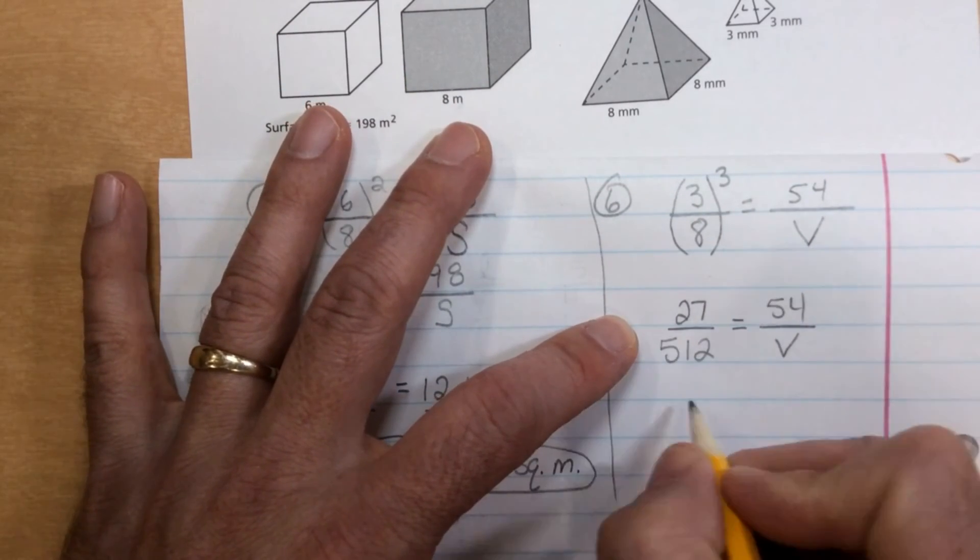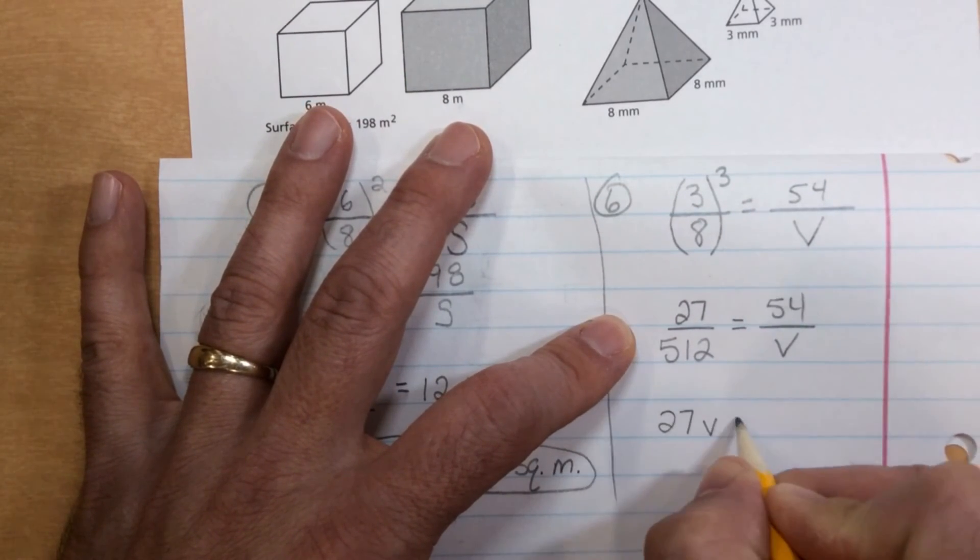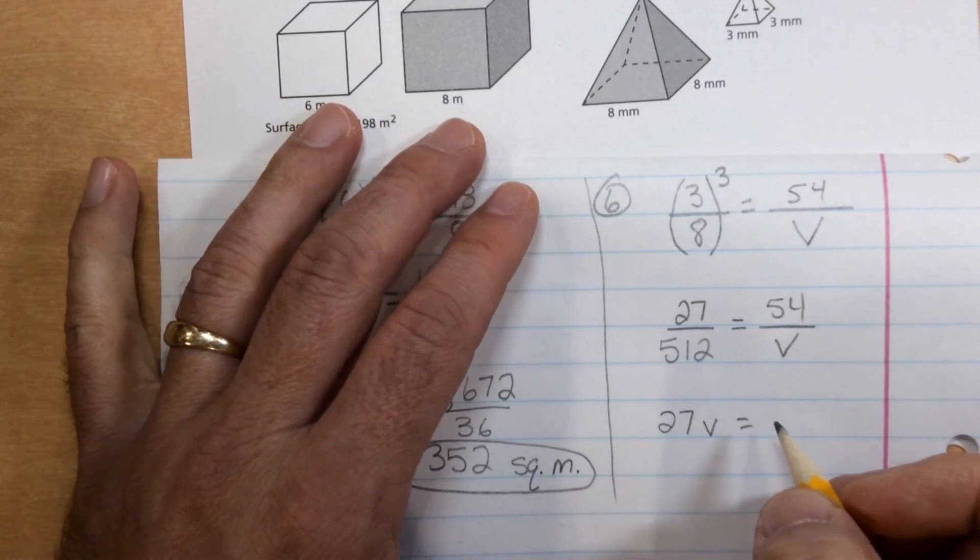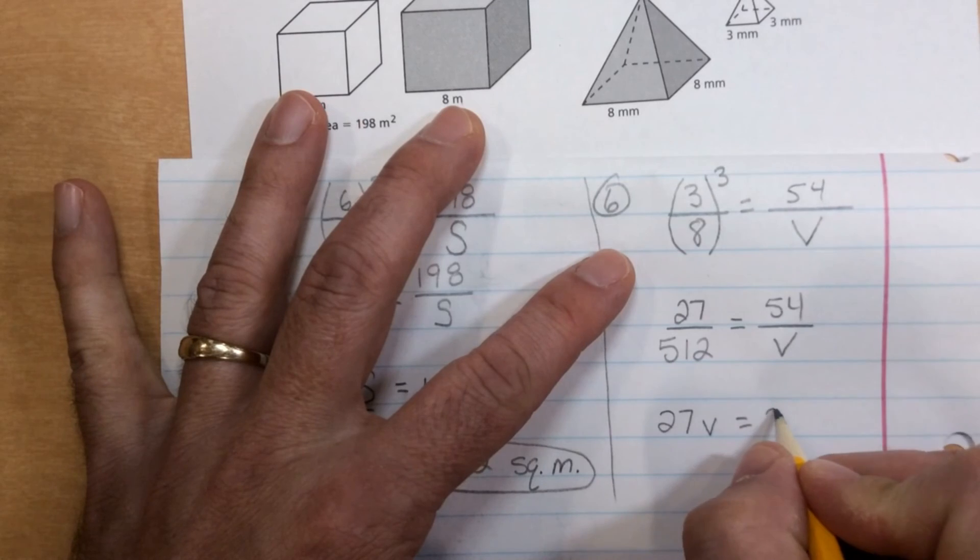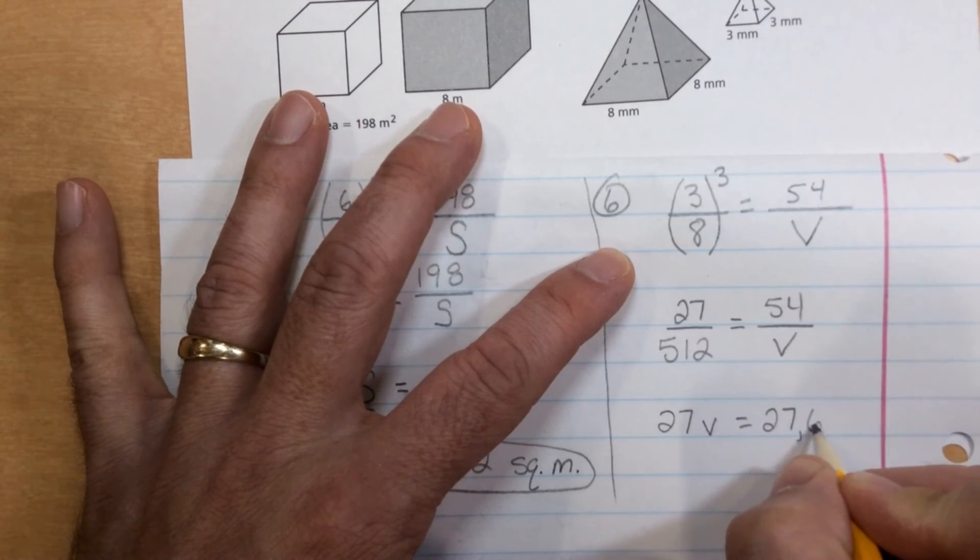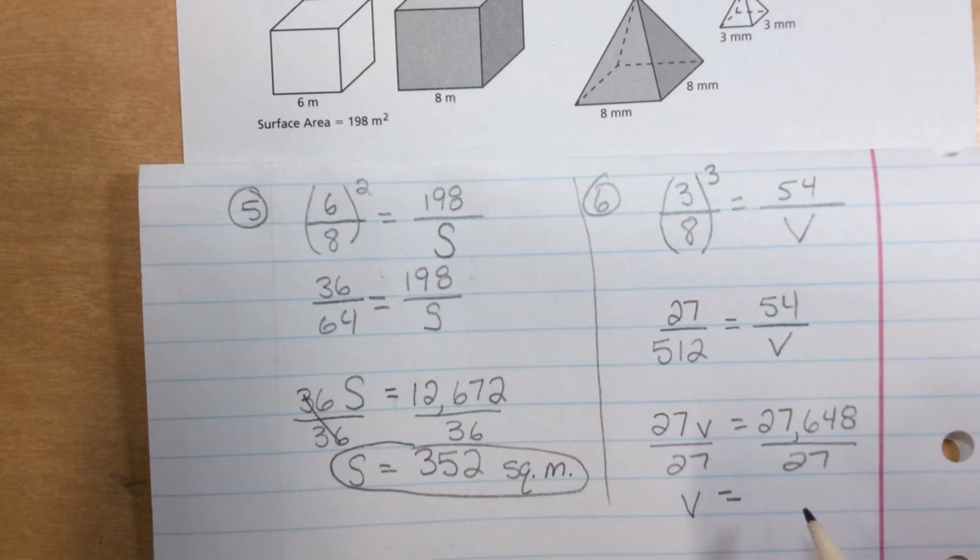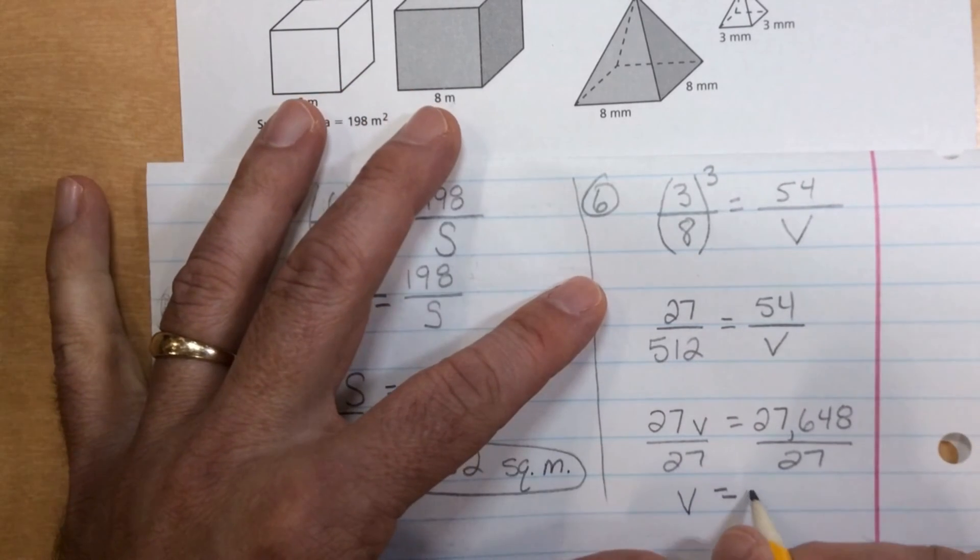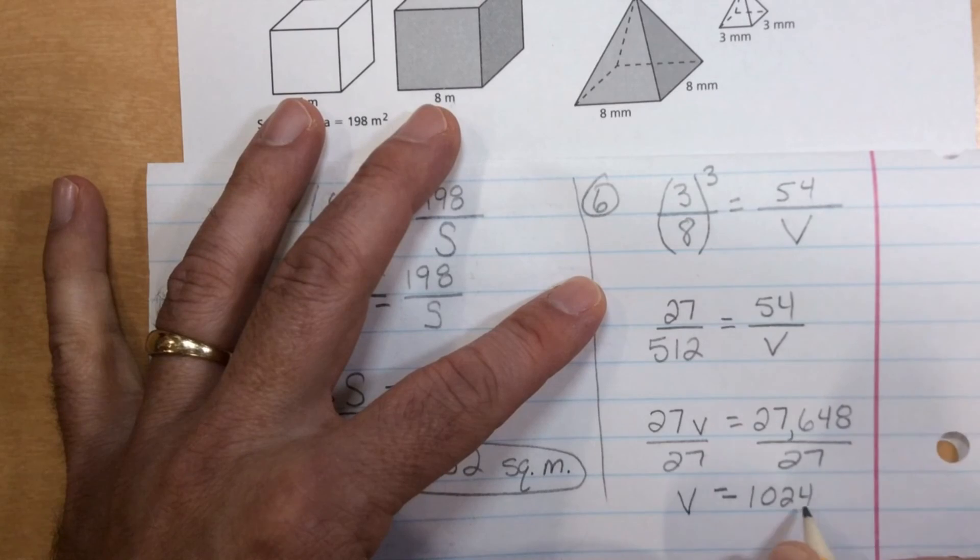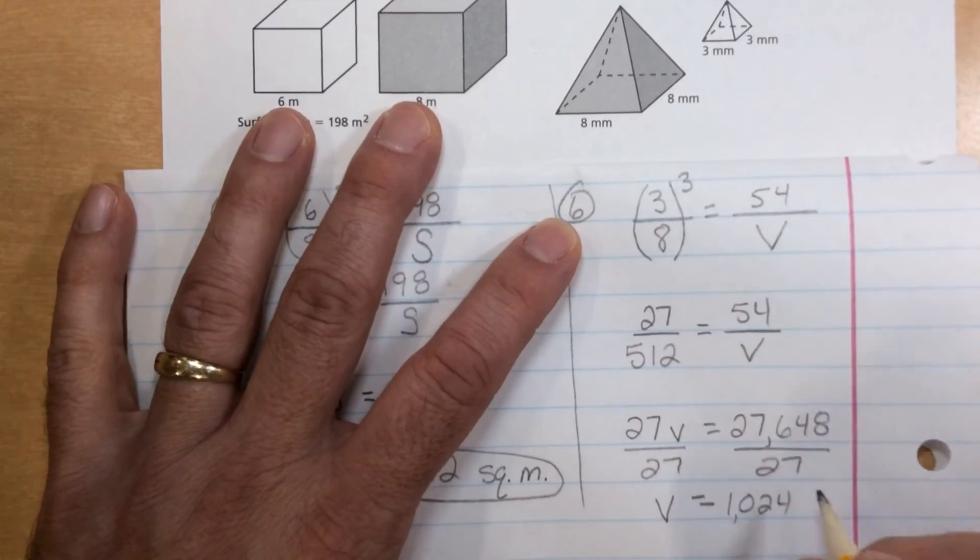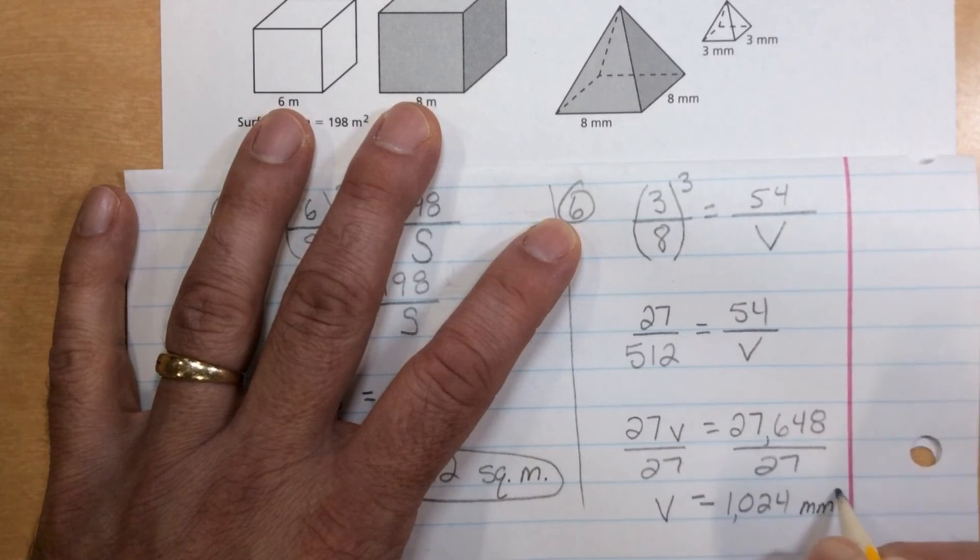27 times V. 27 times V is 27 V. And 512 times 54 is 27,648. 27,648. Dividing both sides by 27. We get V equals 1024. And that will be millimeters cubed, because it's volume. Millimeters cubed.